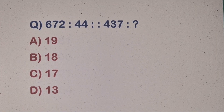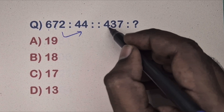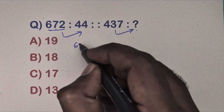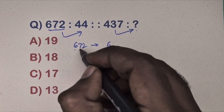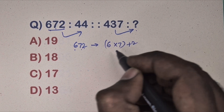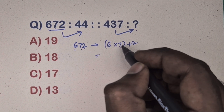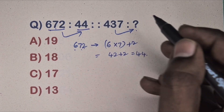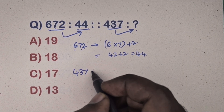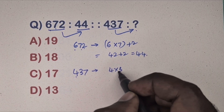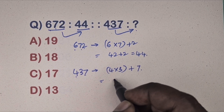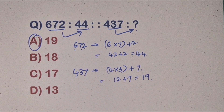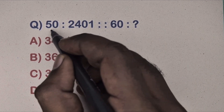Next question: 672 is related to 44, and 4 3 7 is related to which number? Options are given. Find the relation: take 672 — multiply the first two digits and add the third: 6 into 7 equals 42, plus 2 gives 44. Take 4 3 7 — 4 into 3 equals 12, plus 7 gives 19. So option A is the correct answer.